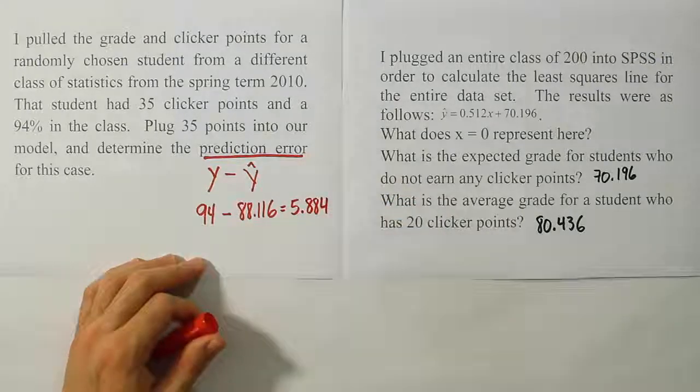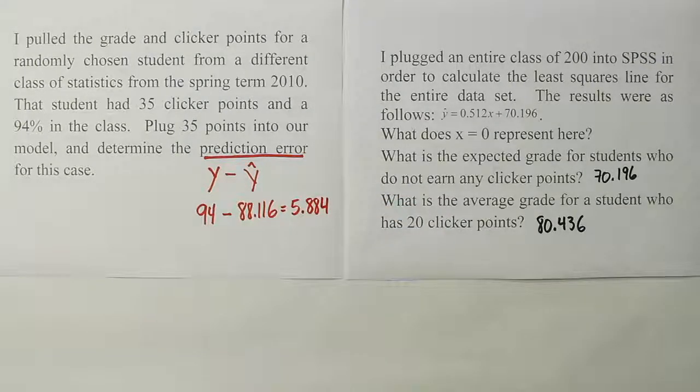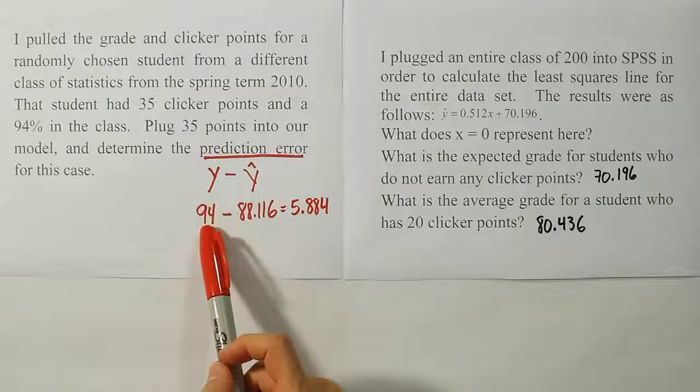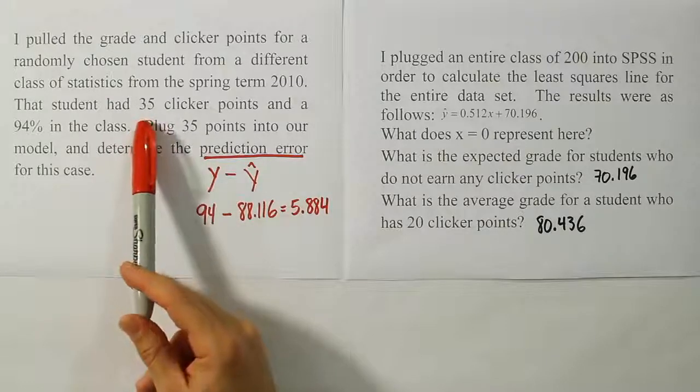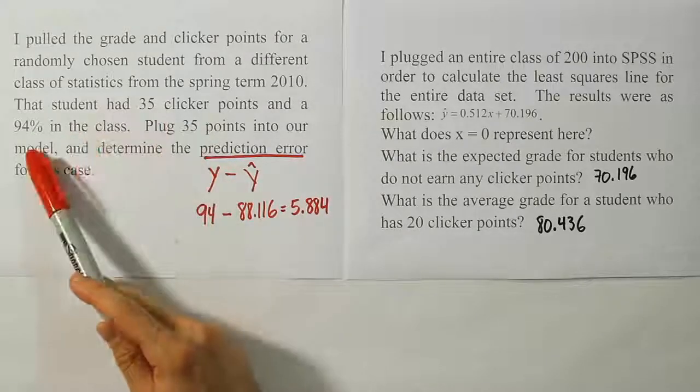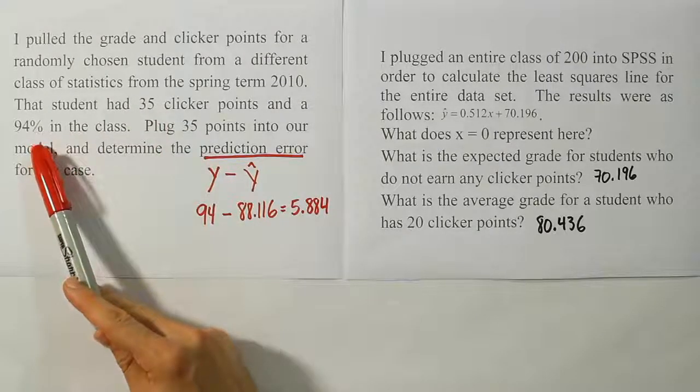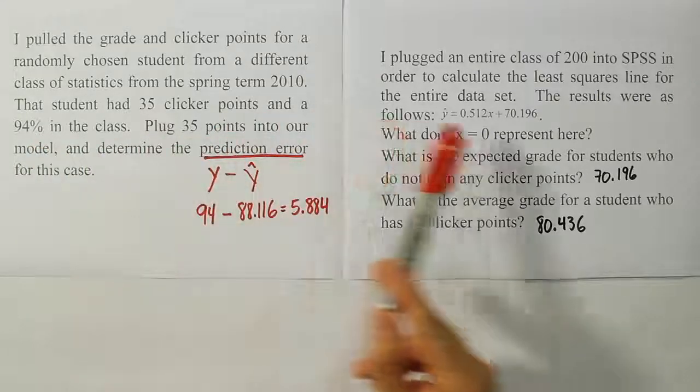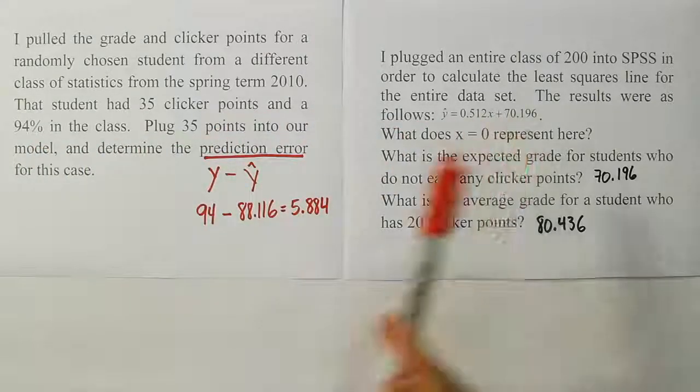And so that's the prediction error for this particular case. Alright, so again, prediction error is just the actual observed Y value at that X value. So at 35 points for this actual student, that student had a 94%. I then plugged in 35 points into the equation and found out that the model would predict an average grade for people with 35 points to be 88.116.